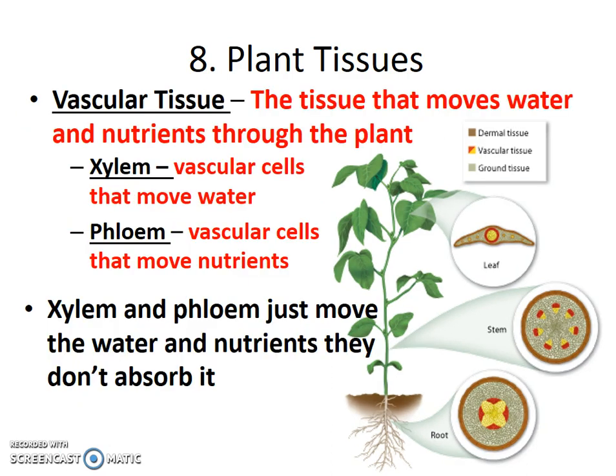Vascular tissue is the yellow and red sections of the leaf, stem, and root. Vascular tissue moves water and nutrients through the plant. It moves water from the roots to the leaves so that the leaves can use that water, break it apart in the light reaction, and use it for photosynthesis. Then it takes the sugar generated from photosynthesis and moves that sugar from the leaf to the root for storage. Specifically, it does that separately.